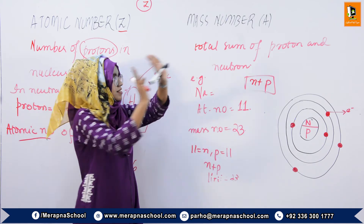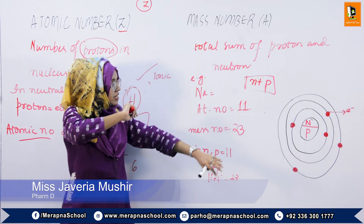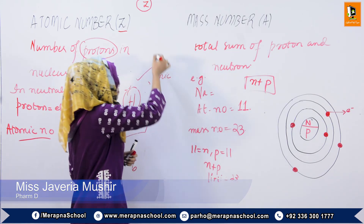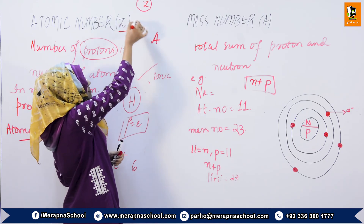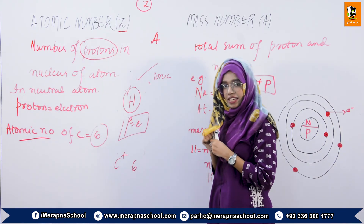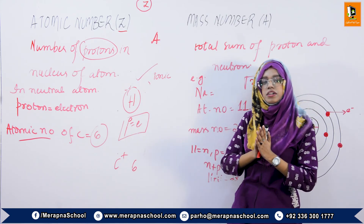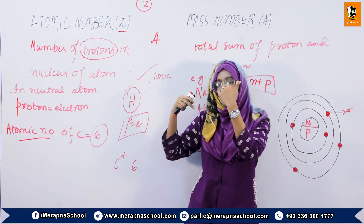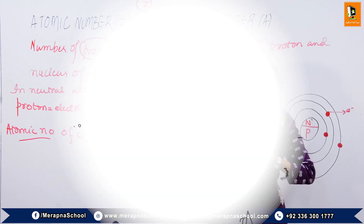ठीक है, यहाँ तक concept clear है। इसकी notation हमेशा ऐसी होती है: अगर किसी भी compound के आगे A लिखा है तो उसके mass number की बात कर रहे हैं, और Z लिखा है तो atomic number की बात कर रहे हैं। This was all about atomic number and mass number — the number of protons, and the number of protons plus neutrons. Thank you.